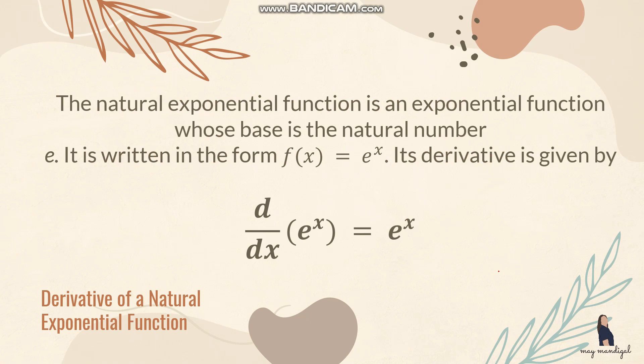Let's start with the derivative of a natural exponential function. The natural exponential function is an exponential function whose base is the natural number e, which is in the form f(x) = e raised to x. Its derivative is given by d/dx of e raised to x equals e raised to x. So the derivative of e raised to x is e raised to x also.